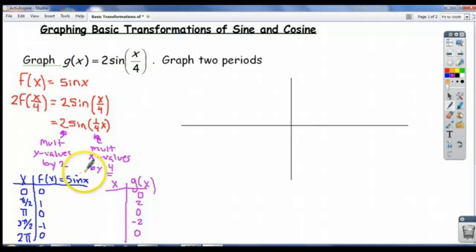And we're going to multiply the x values by 4. So 4 times 0 is 0. You don't have to do this in order. I'm going to go to the period. 4 times 2π is 8π. And at this point, you can either go ahead and multiply π over 2 by 4, π by 4. Right, 4 times 2π is 8π.